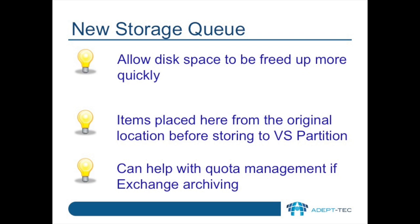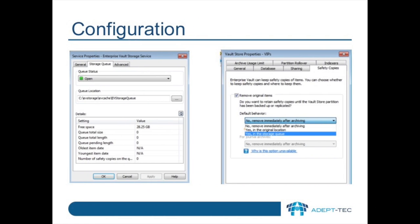One of the other new features of Enterprise Vault 11 relates to storage. This is a new way of handling safety copies with Enterprise Vault — these are to ensure that the files that are archived are truly secured before being removed or otherwise processed in the source location. In the past, these pending items have always still taken up space until a full backup has been done. Now it's possible to change that with the new features here, though it is worth remembering that this new storage queue will take up additional disk space. The new storage queue and options for safety copy storage are on the properties of each storage service in the environment, and on the properties of the Vault Store. We'll cover these in slightly more detail in a future video.